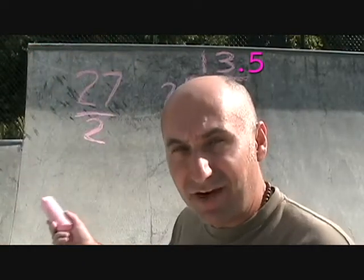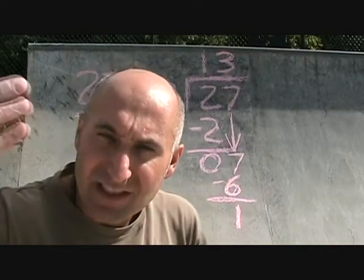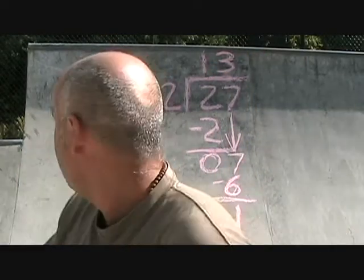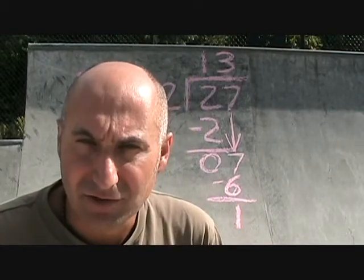So the answer would be 13 and a half, which is what 27 divided by 2 is. But we're not going to do that because we want to stay with fractions. Especially with polynomials, we want to stay with fractions.